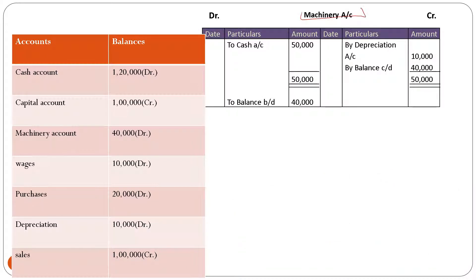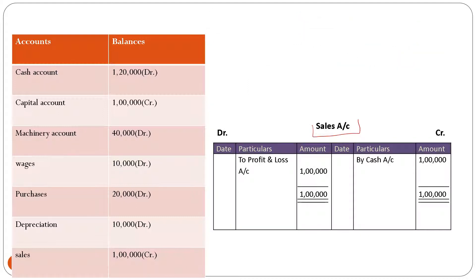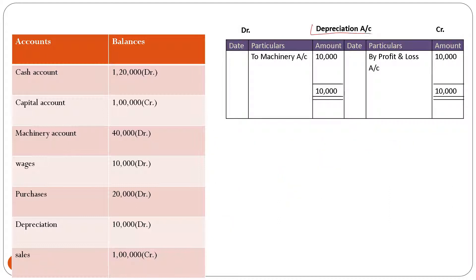Next is machinery account — the brought down balance is forty thousand rupees. The next account is sales account: the carry down balance transferred to the profit and loss account is one lakh rupees. Next is depreciation account: the carry down balance transferred to the profit and loss account is ten thousand rupees. We are now done with every transaction and the recording of balances in the balance summary.